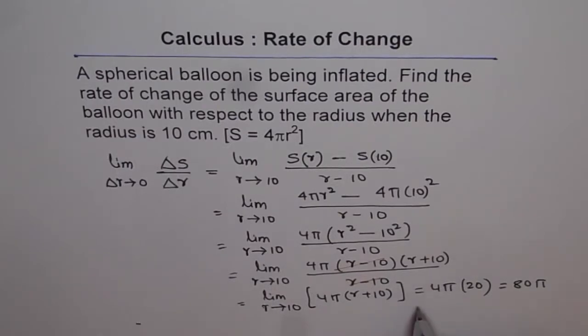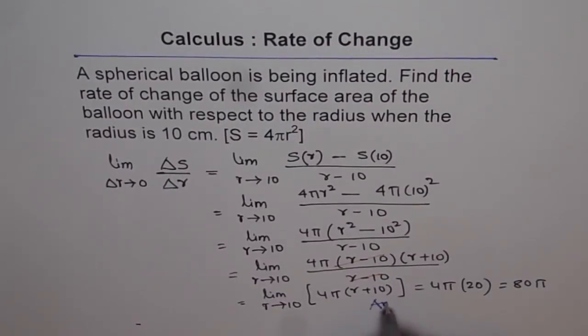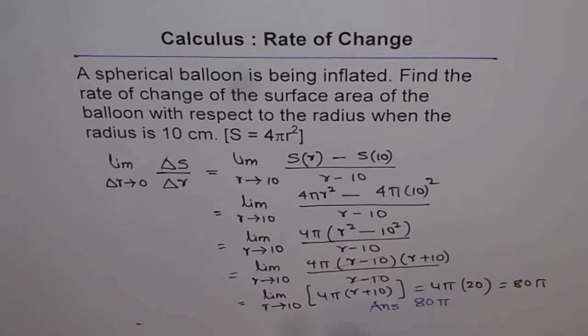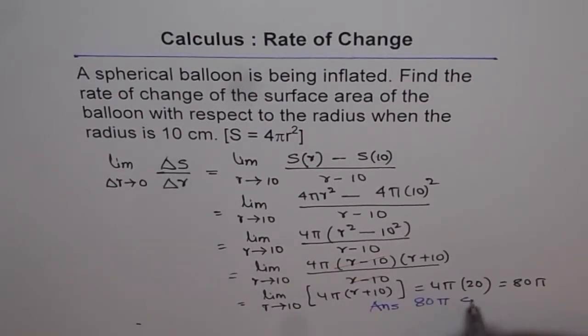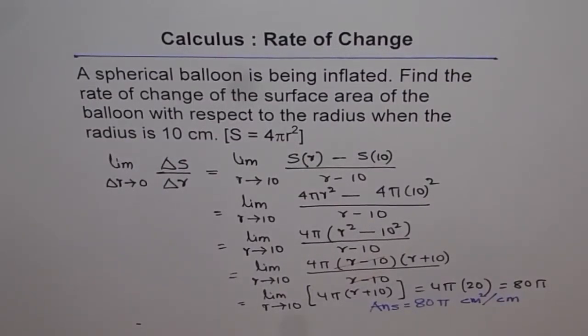So we can write down our answer as, rate of change will be 80 pi centimeters. So it is centimeter squared for surface area over centimeter for radius. So that is the exact answer for this.